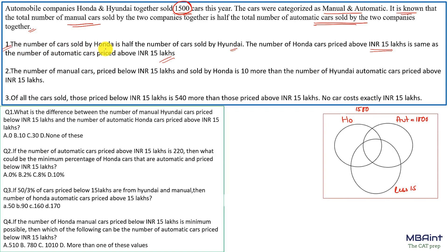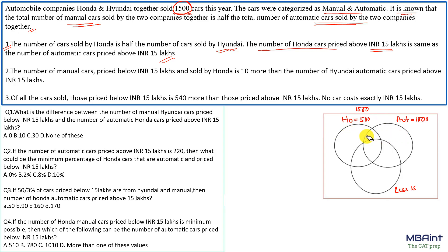Honda cars priced above 15 lakhs corresponds to two regions in the diagram. The number of automatic cars priced above 15 lakhs also corresponds to two regions. These two sums are equal. Using variables, if those regions are labeled a and b, the overlap b is common, leaving equation: a + b = a, simplifying the relationship.